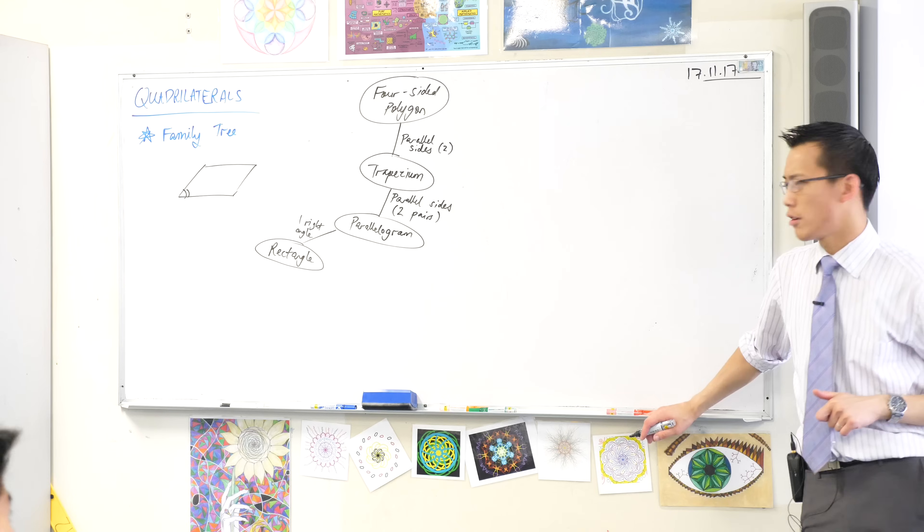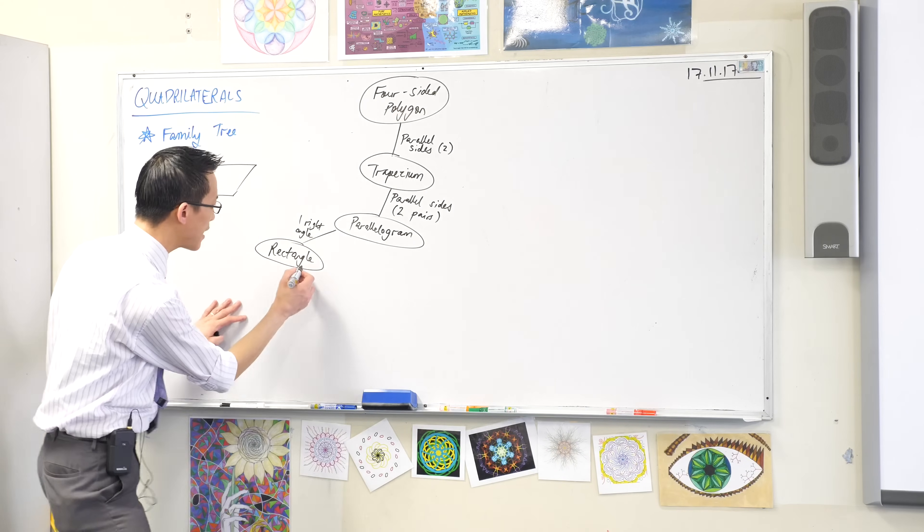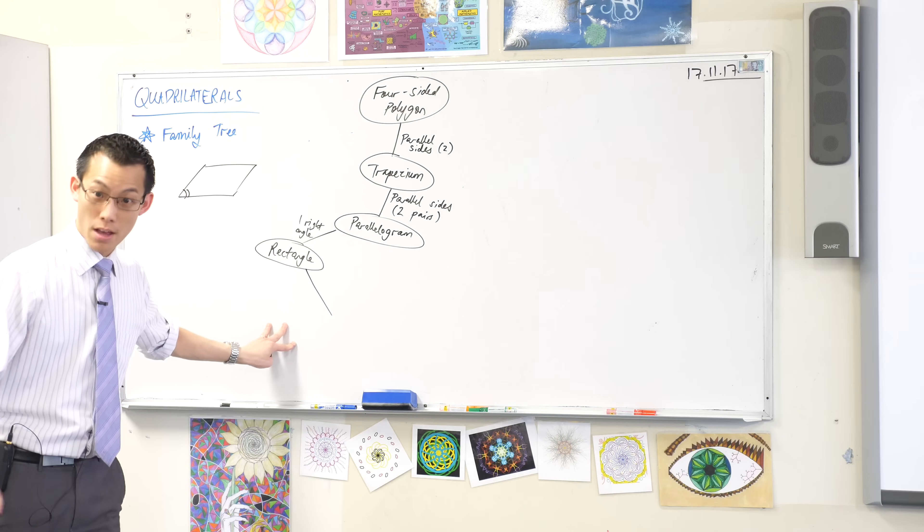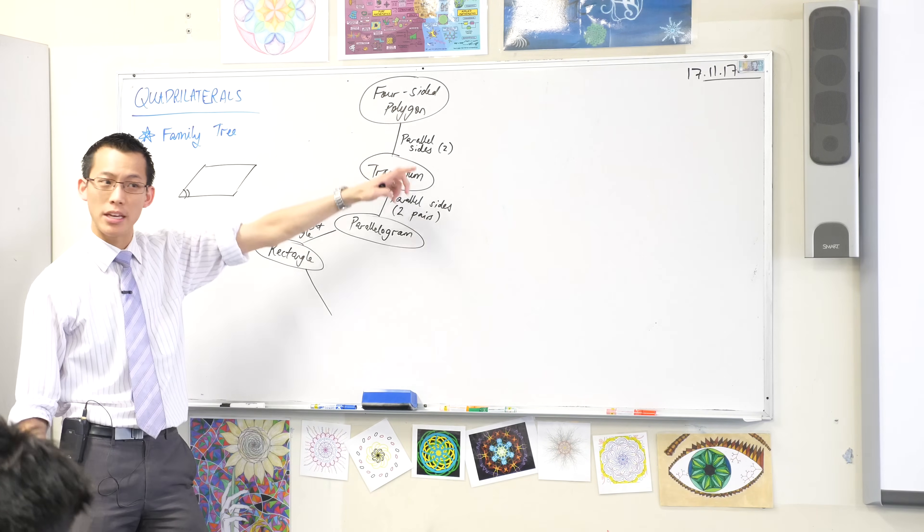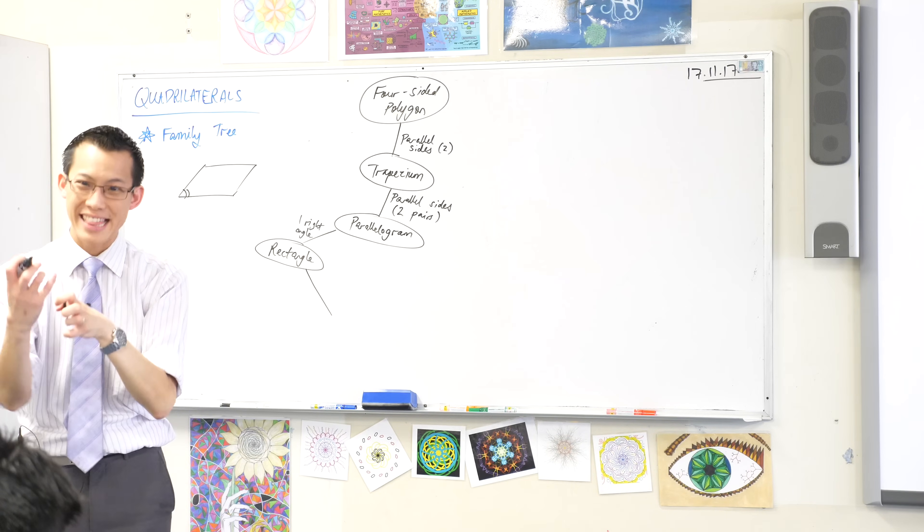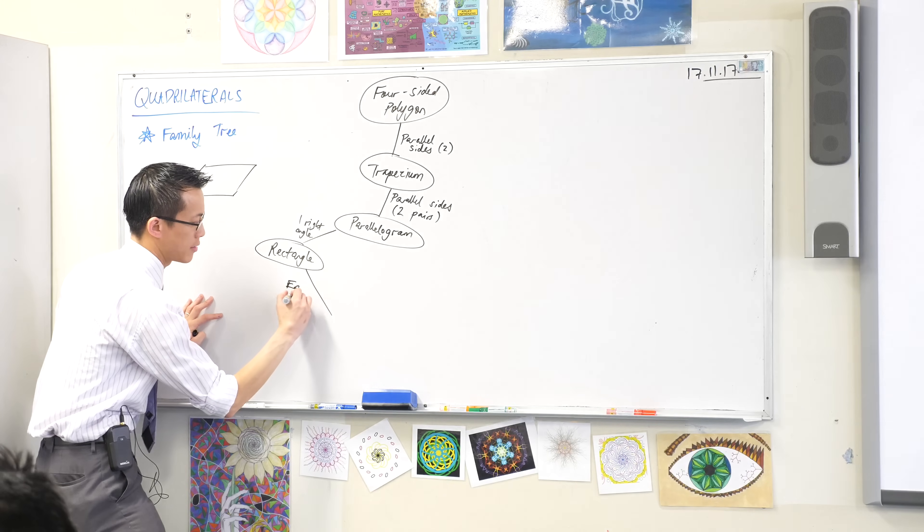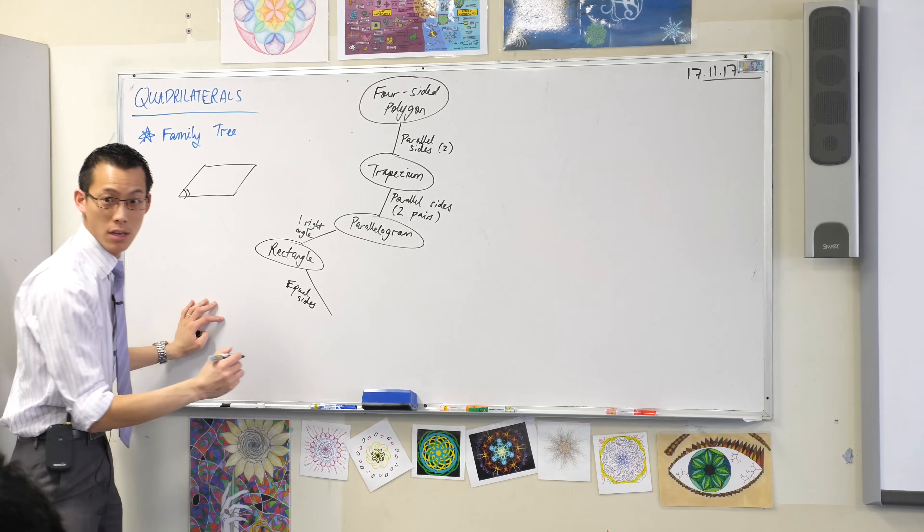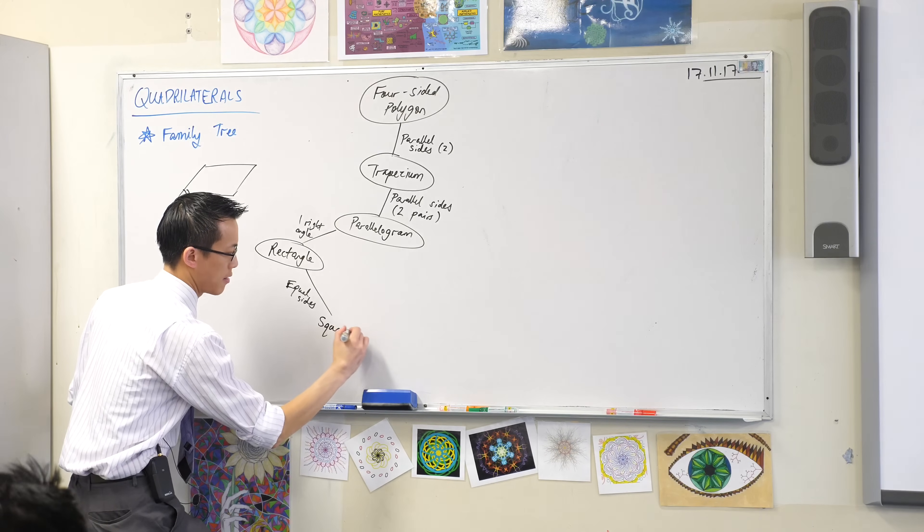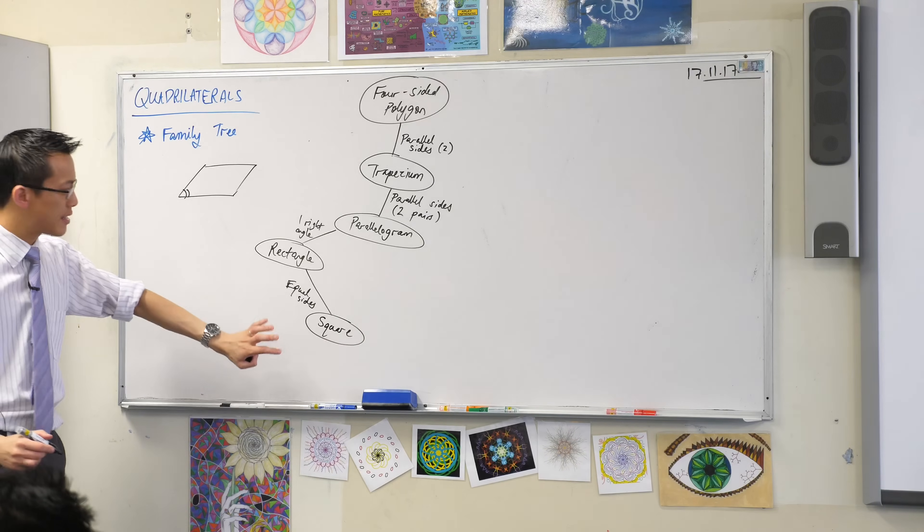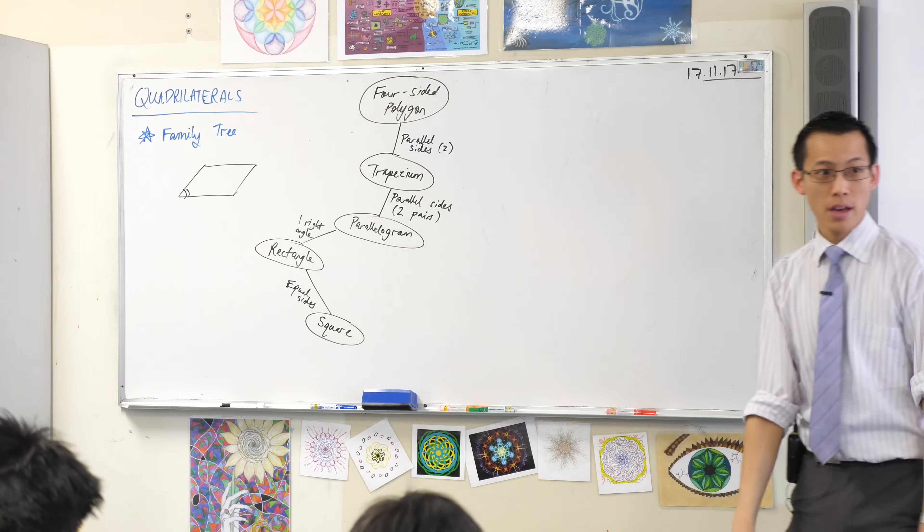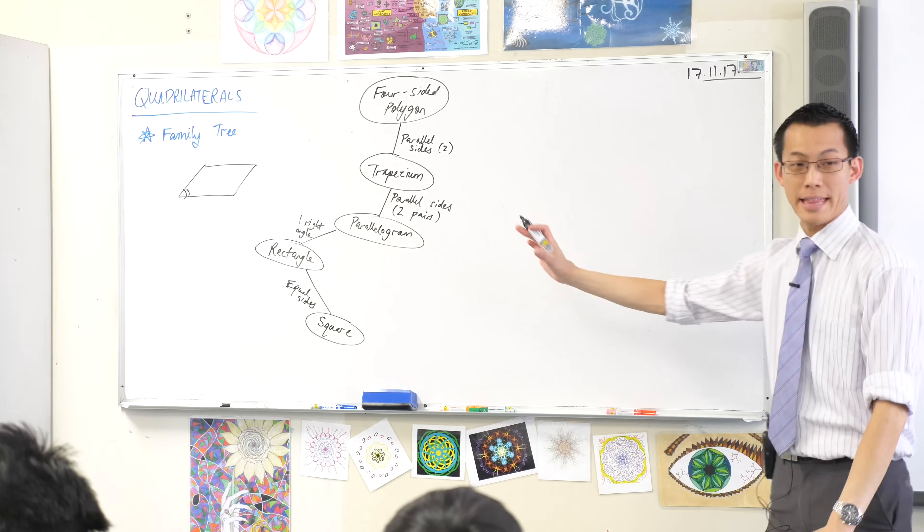What else could we do? Let's keep going from the rectangle. Can you make the rectangle more special? What could you do to it, Arian? All sides equal. Okay, so see how we've got parallel sides up here? That's about the direction of the sides. But Arian's making a suggestion about the length of the sides. So let's add in equal sides. What does this create? It's a square. Now, the square is the most special of all of the quadrilaterals. So that's why you can see I've drawn it at the bottom. There's no more that we can add to make it more super special. That's it.